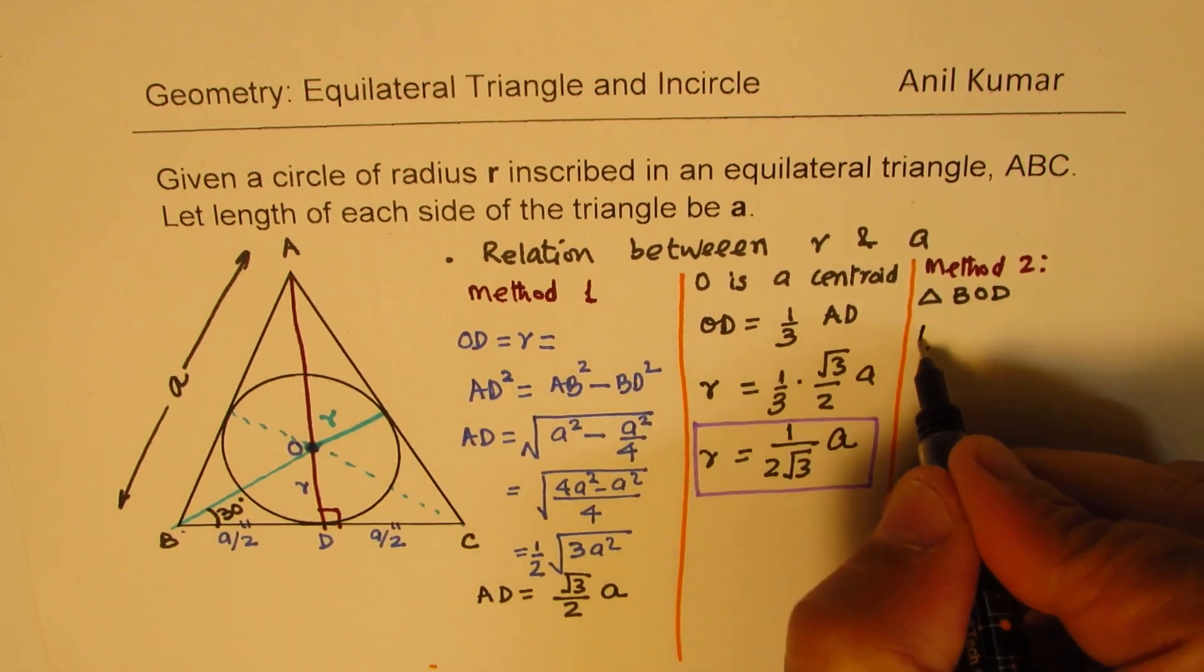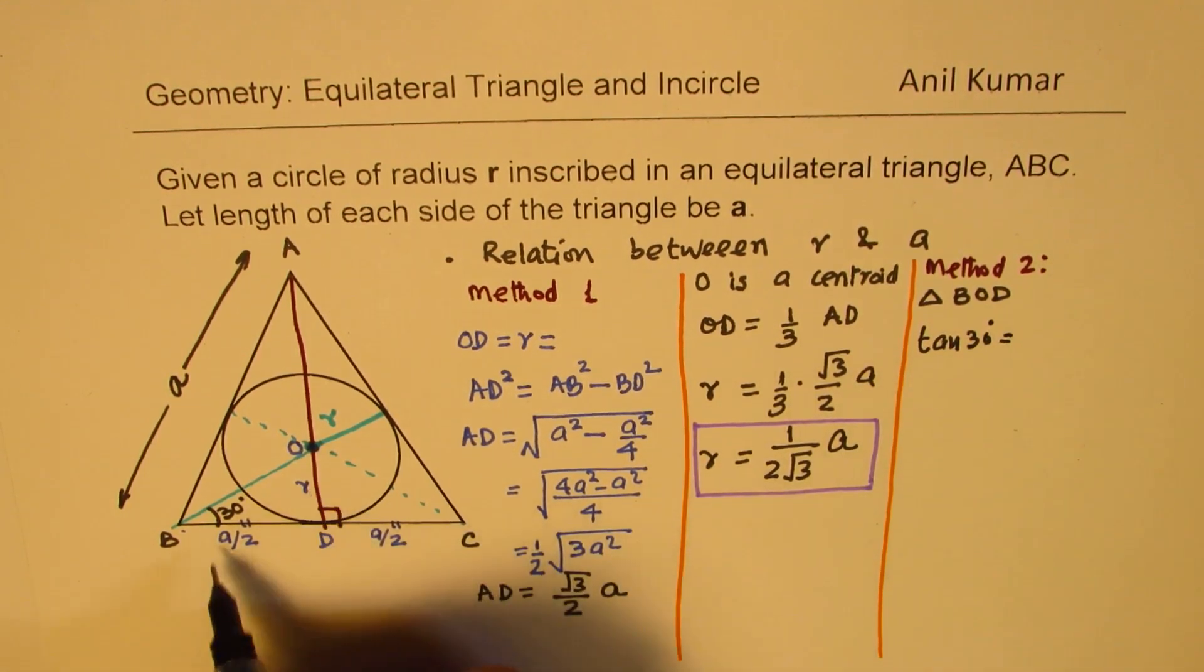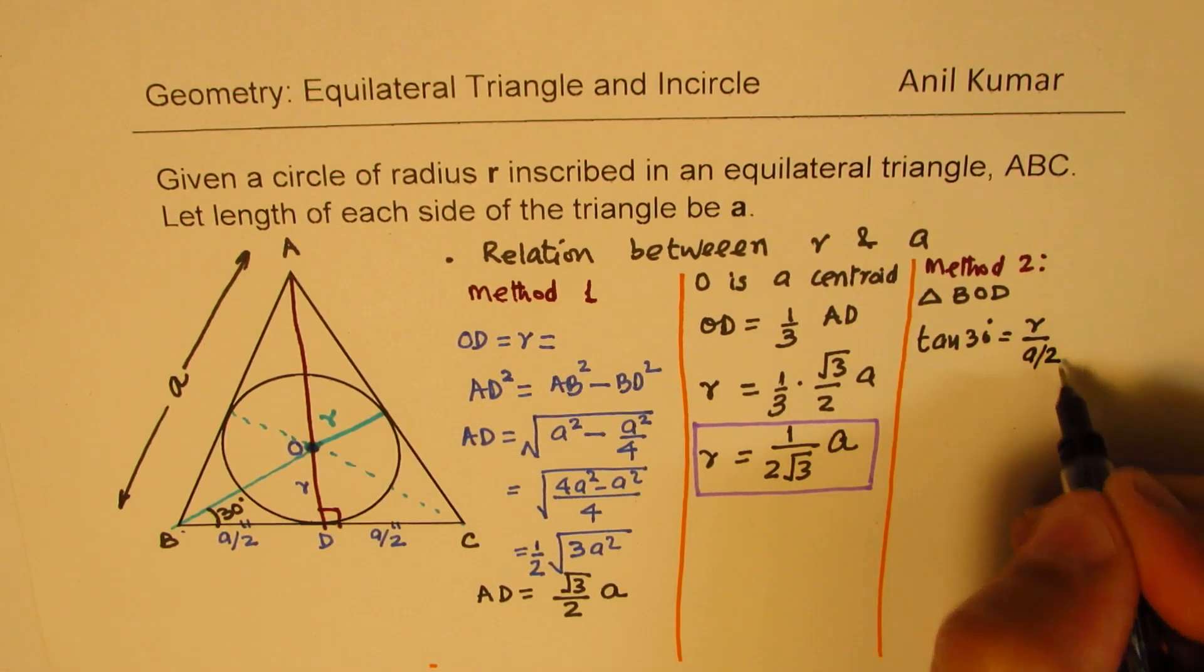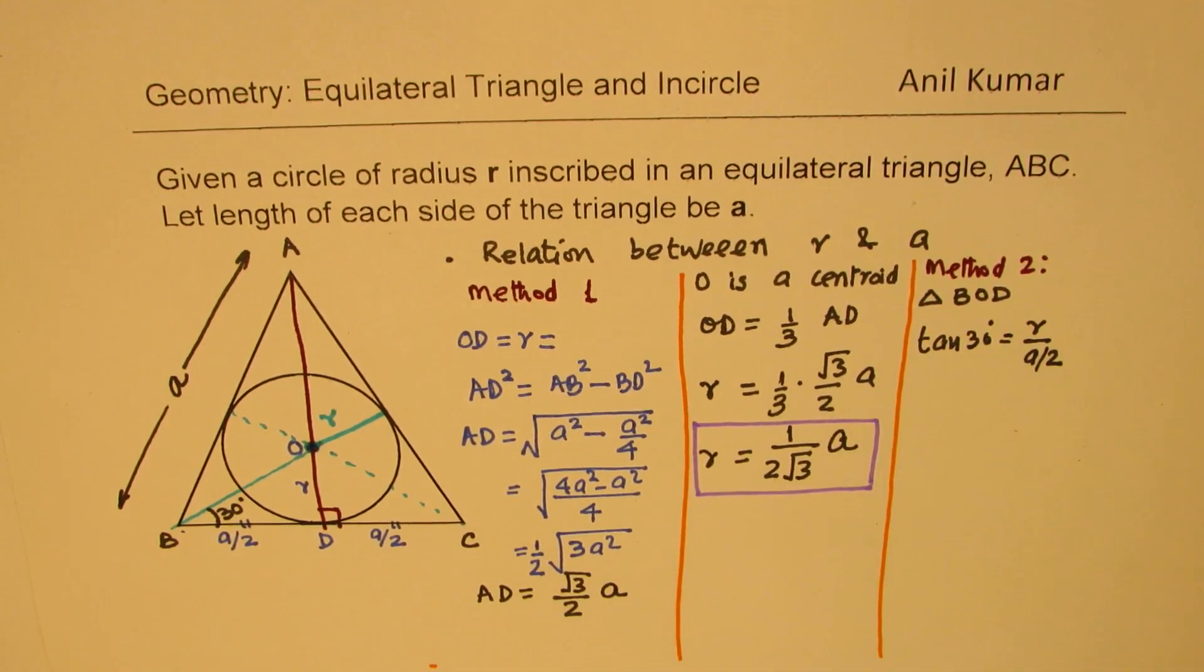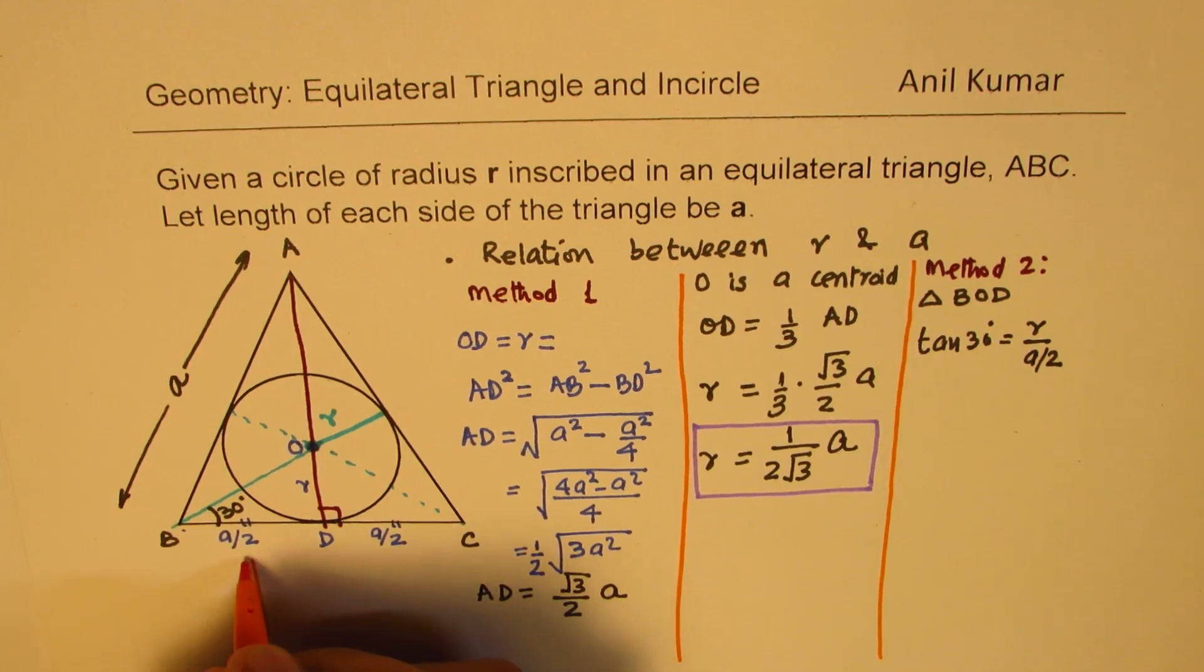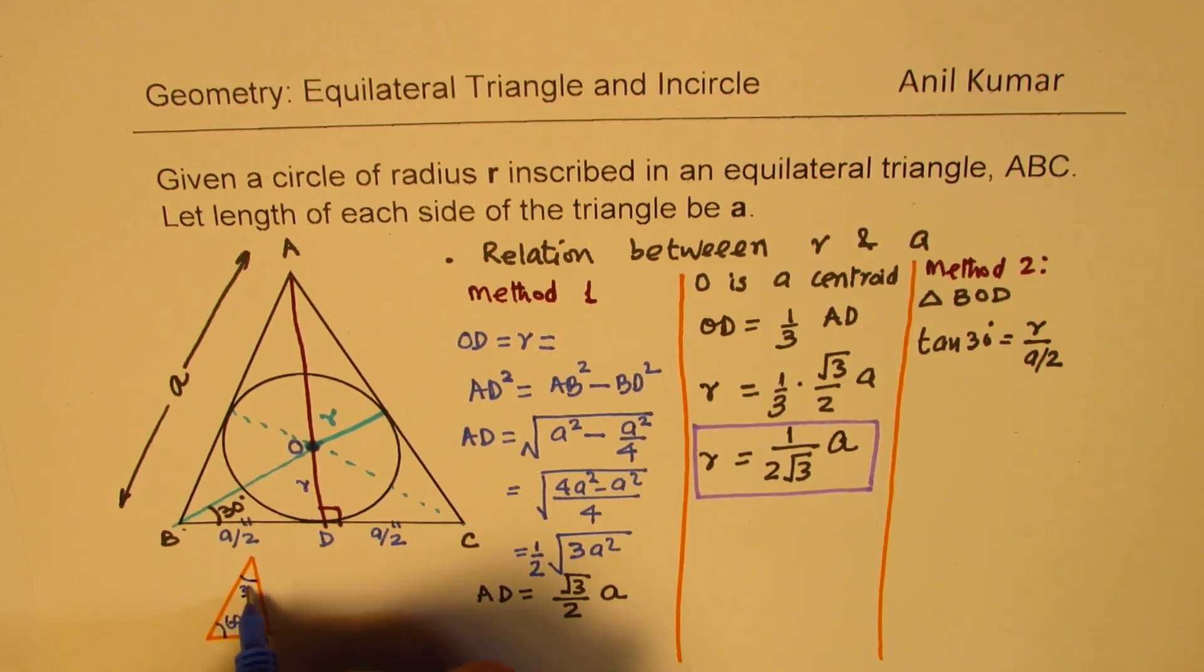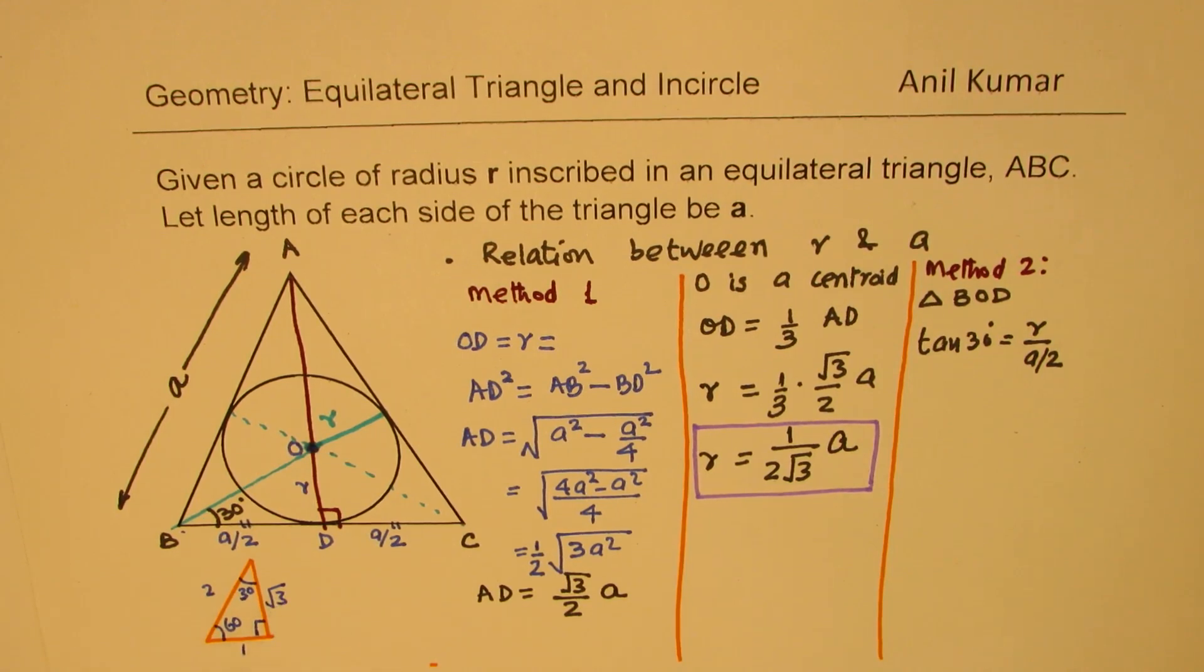So you can write tan of 30 degrees as equal to r over a by 2. Now, what is tan of 30 degrees? Well, special triangles, if you remember, let me just sketch one here. So this is my 30, 60, 90 triangle. The sides are 1, 2, square root 3. And you know clearly, tan of 30 is 1 over square root 3.